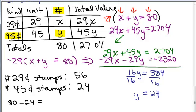Now, we definitely want to make sure that if we had 56 29-cent stamps and 24 45-cent stamps, that total value really is 27 dollars and 4 cents. Remember, that's what the original problem says. So that's our last thing to do is to check. So I'm hoping this is the right answer.